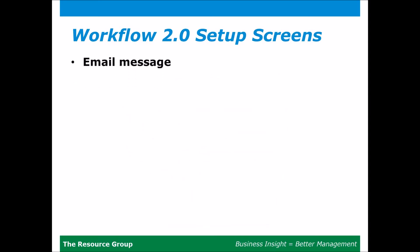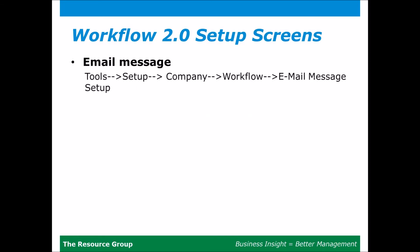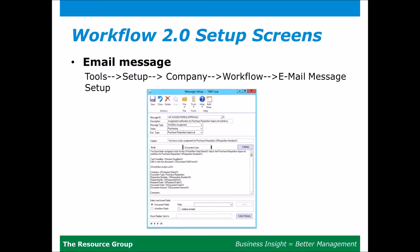The next setup is the email message. Go to Tools, Setup, Company, Workflow, and then Email Message Setup. This is where you change the templates for the emails for the different types of notifications. Certain fields are pulled in automatically and will auto-populate with data when the notification is sent.